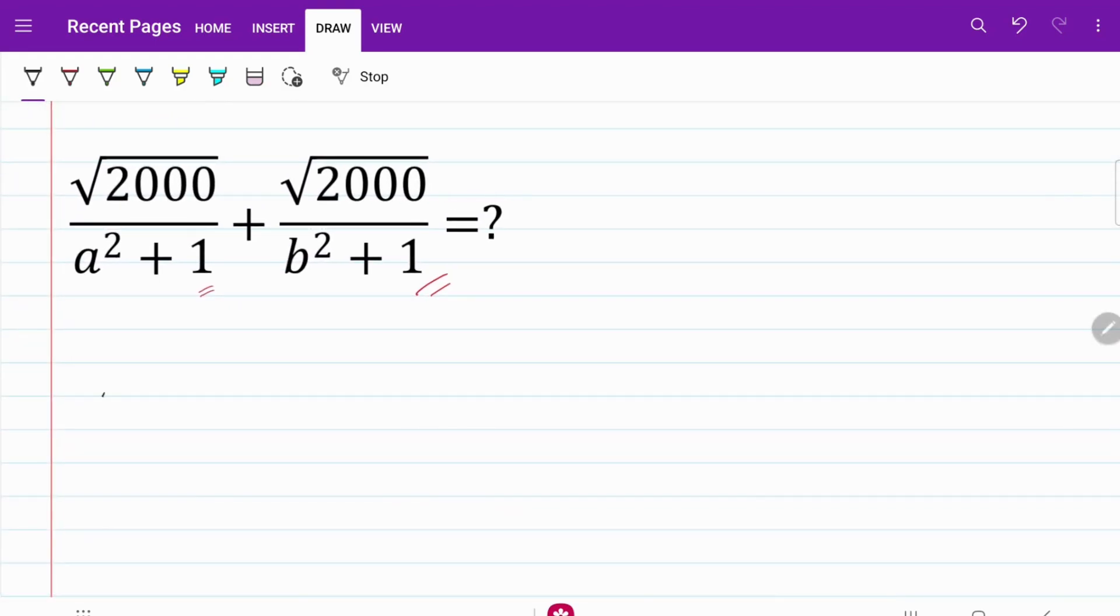I have square root of 2000 over a squared plus ab. Notice that I have substituted 1 with ab. And plus square root of 2000 over b squared. Again, with a substitution, 1 becomes ab.